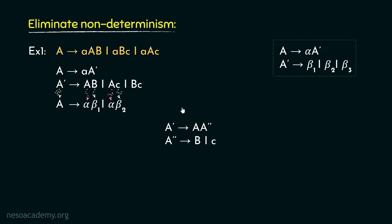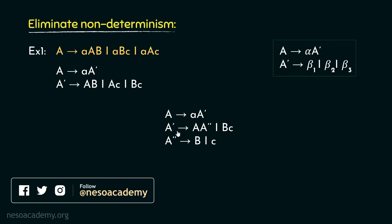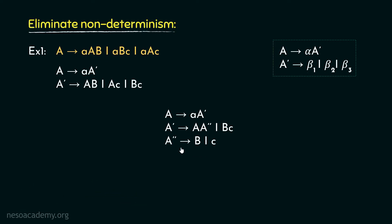It is not complete yet, because A prime could also generate b followed by small c, so we need to facilitate that production as well. Another production rule — A prime can be rewritten as bc — should also be added. So now the entire set of deterministic CFG productions is: A → a A prime; A prime → A A double prime | b c; A double prime → b | c. Here A is the start symbol. This is how, using the left factoring procedure, we can eliminate non-determinism.